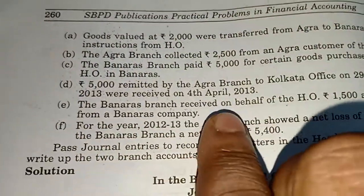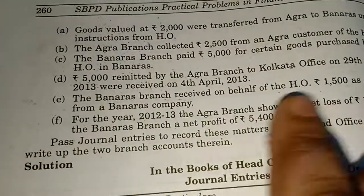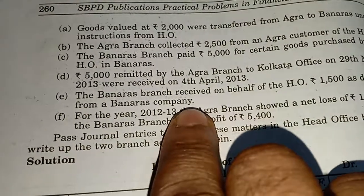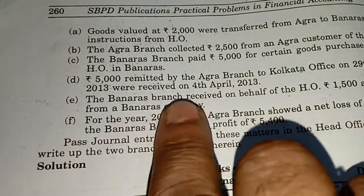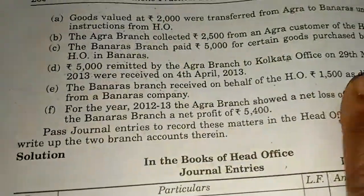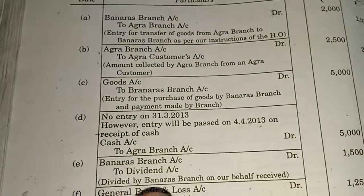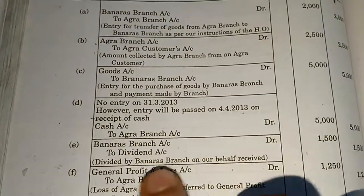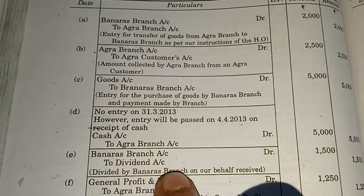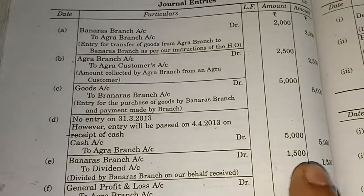The Banaras branch received on behalf of the head office Rs. 1500 as dividend from a Banaras company. Since the Banaras branch received this on behalf of the head office, the entry will be: Banaras branch account debit to dividend account — dividend received by Banaras branch on our behalf, Rs. 1500.